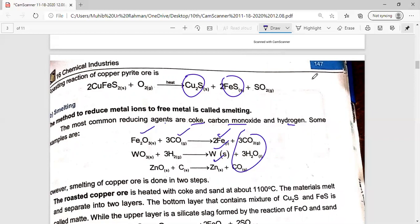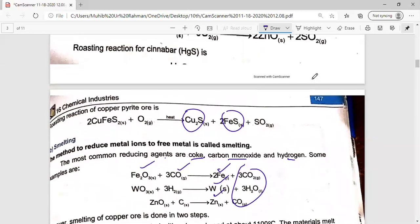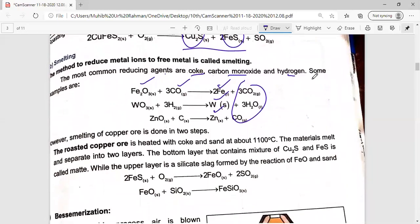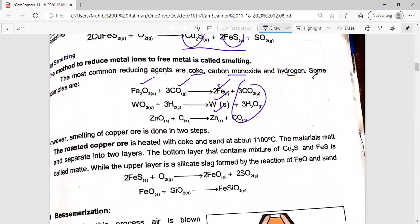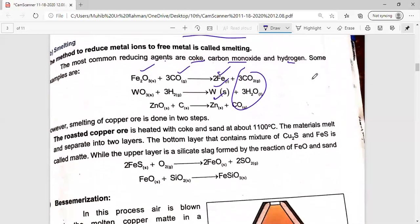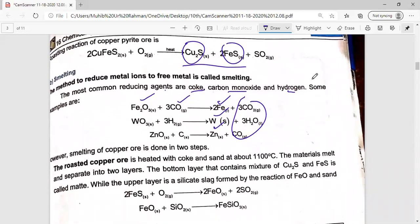But copper ore is the copper sulfide plus iron sulfide. We remove it in two steps. First of all, the roasted copper, the copper sulfide, we heat it with coke and sand. We heat it with copper sulfide and coke and sand, we heat it with the mixture to 1100 degrees Celsius.